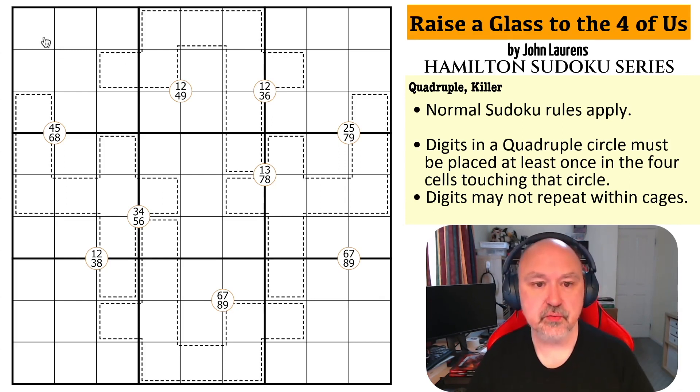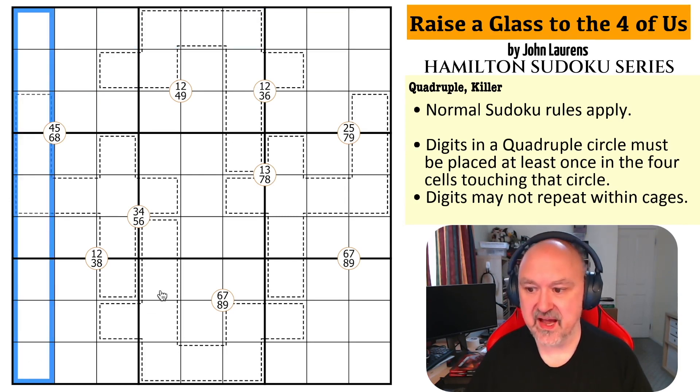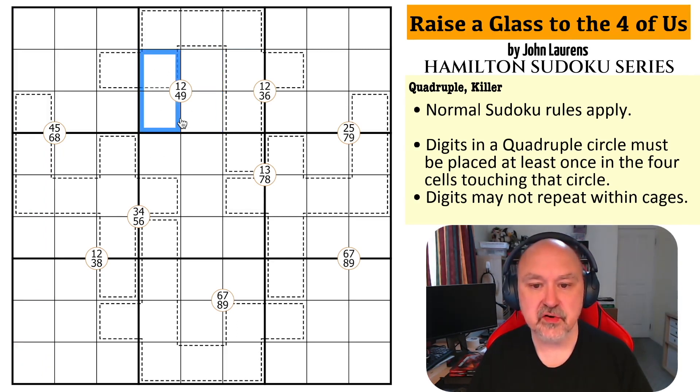Normal Sudoku rules apply in every box, in every row, and in every column. The digits 1 to 9 must be placed without repetition. We have quadruple circles. Which means, around these circles, the digits that are in the circle must be touched at least once. Or must be seen at least once in the four cells touching that circle. I think in this puzzle, all of the circles have four digits in them. So, the four digits in the circle will be placed in the four cells touching that circle.